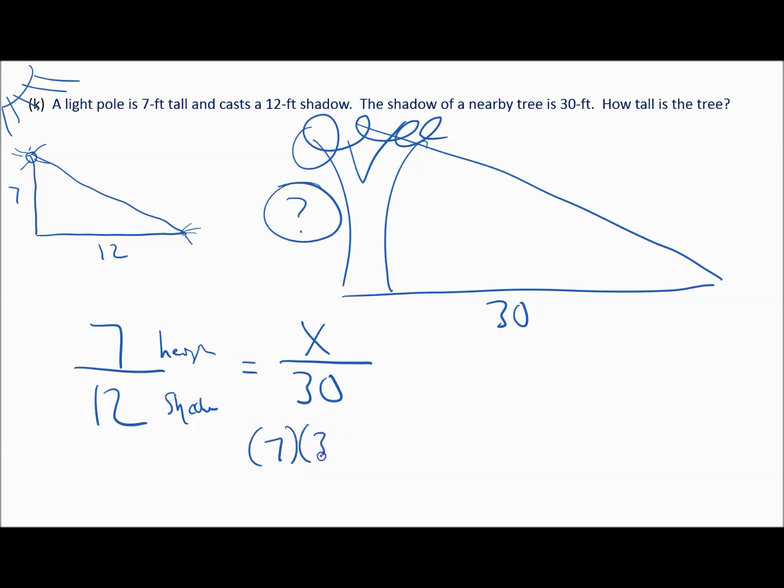So here's what I can do. I can say seven is to 12. So height is to shadow. This is height compared to shadow, is equivalent to, once again, height, we don't know, is to shadow is 30. So I'm going to cross multiply. Seven times 30 is equal to 12 times x. And we know seven times 30 is 210 equals 12x. Divide both sides by 12. So I've got 210 divided by 12, and that's going to tell me x equals 17.5. Now again, the question is, are there any units here? Well, this was all in terms of feet. So this must be in feet as well. So the height of our tree is 17.5 feet. And with the same angle of the sun, we would get a 30 foot shadow for 17.5 foot tree. I hope this helps.